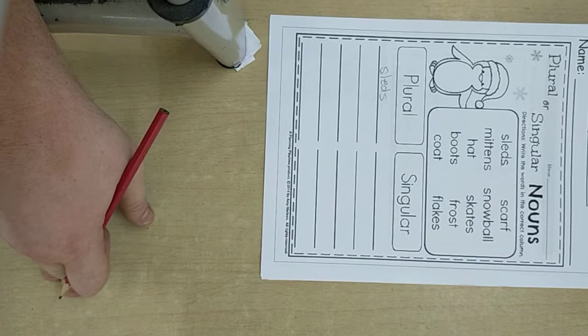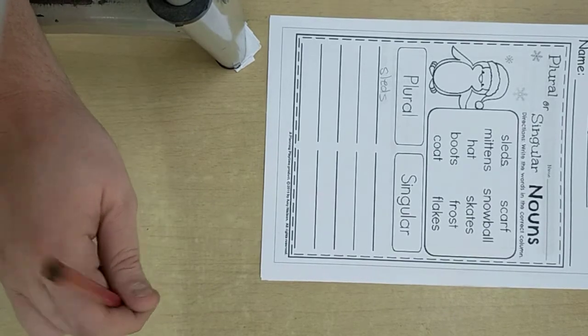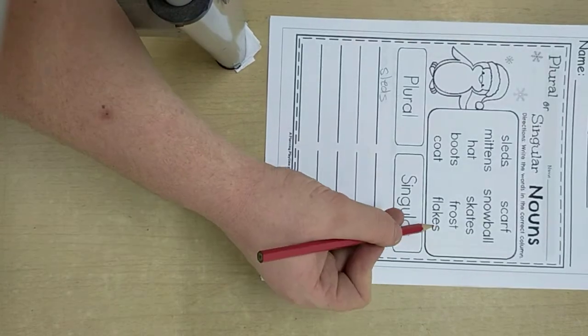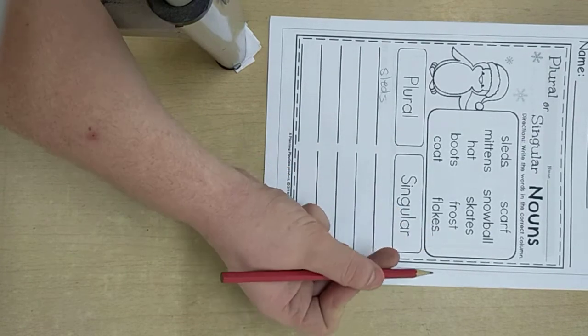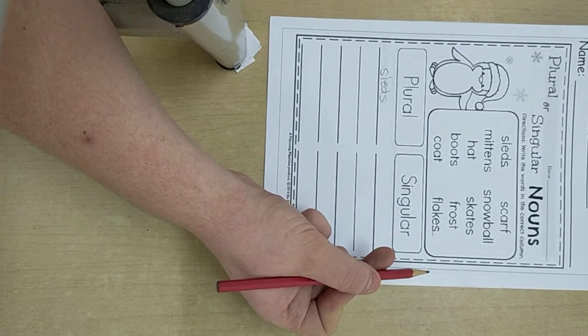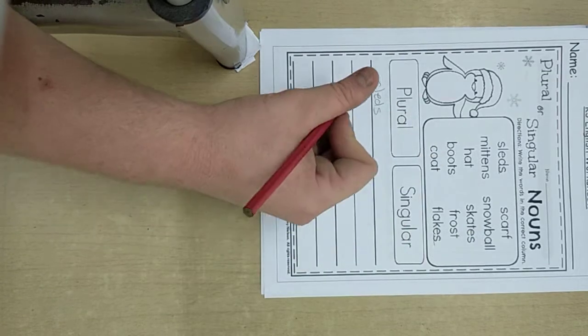Sleds. What is next? Let's look for the letter S at the end. Here we have S at the end. Flakes is plural.